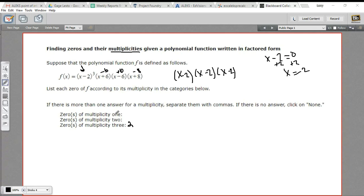So the multiplicity of 1 are negative 6, 6, and negative 8. And there's nothing with a multiplicity of 2 in this one. So that's how to find the zeros of a function and their multiplicities when you've got a polynomial that's written in this factored form.